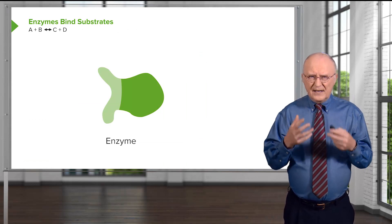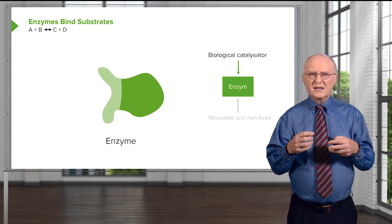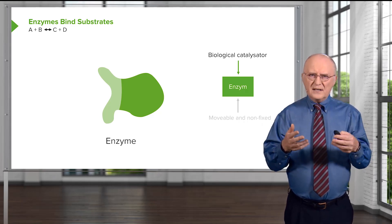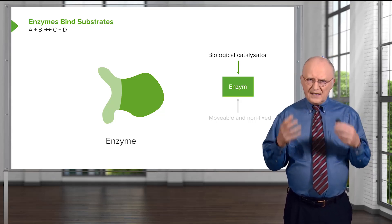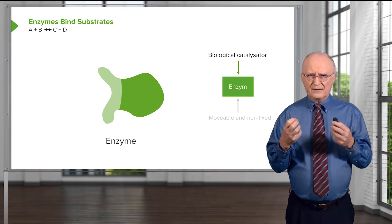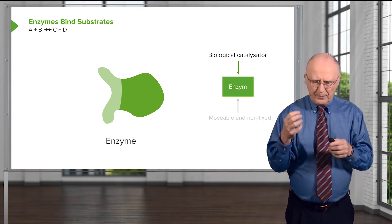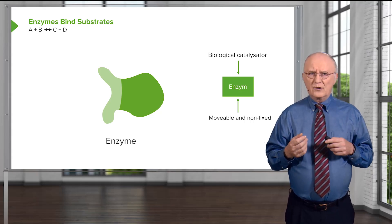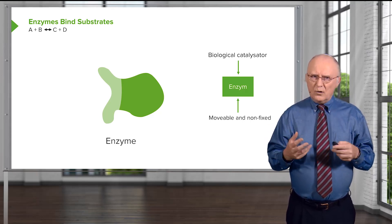Enzymes are magical in their ability to catalyze reactions, and they are so much faster than a chemical catalyst. This illustration of an enzymatic reaction goes step-by-step into the considerations for the ways enzymes accomplish what they do. Chemical catalysts are things that are very fixed — a platinum catalyst has no breathing, no movement to it. It simply is a surface on which something can happen. Enzymes are fundamentally different. We see an enzyme shown in green, and the active site shown in light green, where the reaction is catalyzed.